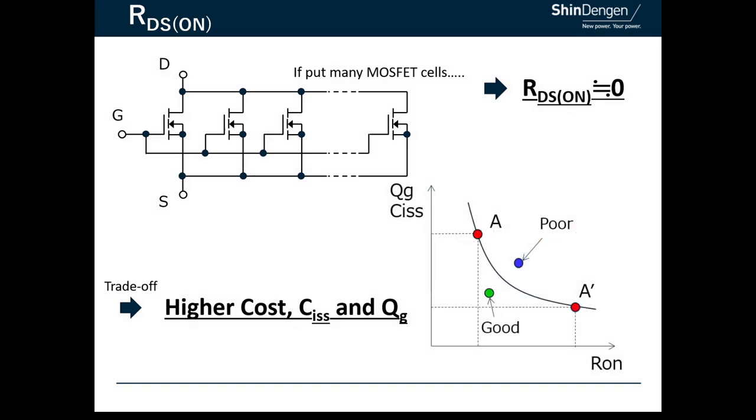Since CISS and QG are proportional to the number of cells, we could do performance comparisons using RDS(ON) multiplied by CISS and RDS(ON) multiplied by QG. We call this figure of merit, or FOM. The smaller the FOM, the better the MOSFET performance.